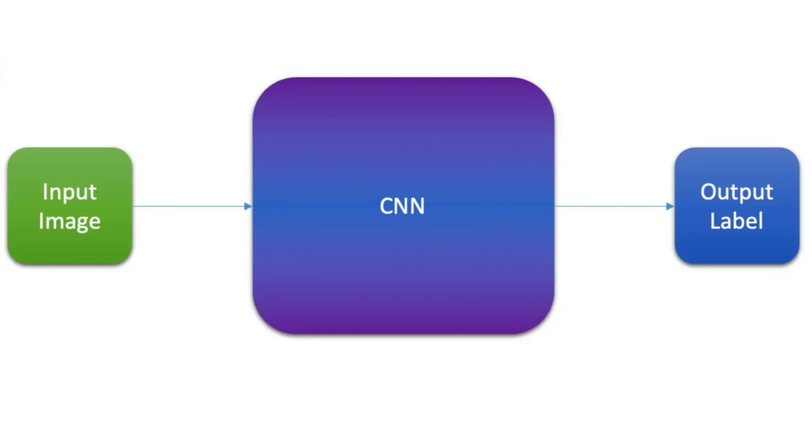The convolutional neural network mainly focuses on the basis that the input will be comprised of images, setting up the architecture to best suit the needs of this specific type of data. The CNN operation consists of an input layer containing images, a convolutional layer, and an output layer containing the image class. The flow of information goes from input images through the convolutional network to the output layer.